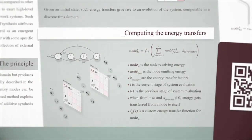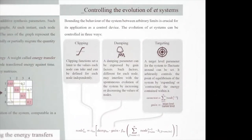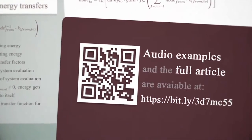The scheme of connections and the weights of the arcs are conveniently described as adjacency matrices, which define the overall behavior of EET systems. Given an initial state and computing the energy transfers against time, we can attend the spontaneous evolution of the system. It is crucial to bound its behavior between arbitrary limits in order to use it as a control device. The bounding is accomplished via clipping functions, a damping parameter, and a target amplitude value providing constant correction of total energy in the system. The music track currently playing is a musical study created using additive synthesis processes controlled by EET systems only. Thank you for your attention.